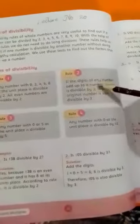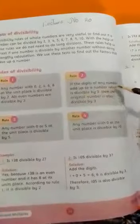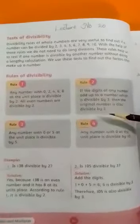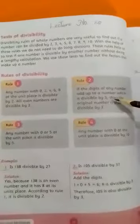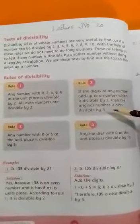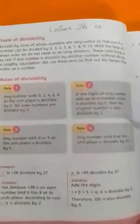Rule 2: if the digits of any number add up to a number which is divisible by 3, then the original number is also divisible by 3. Students, in Rule 2, we learn how to know if a number can be divided by 3 without solving.